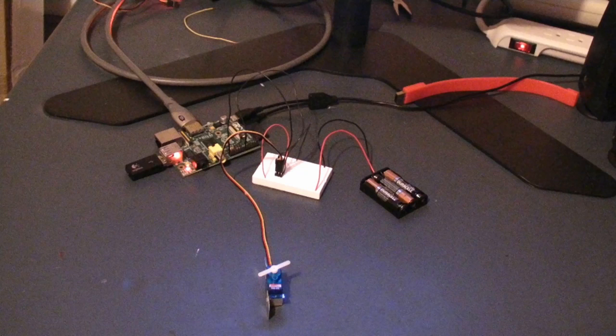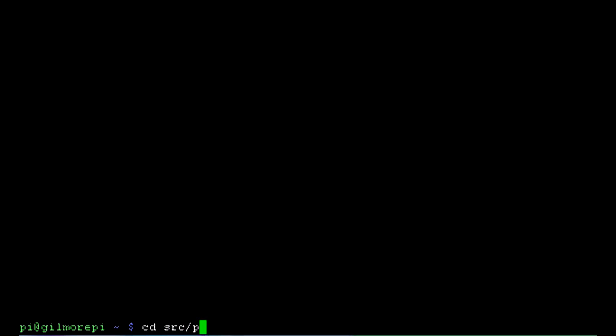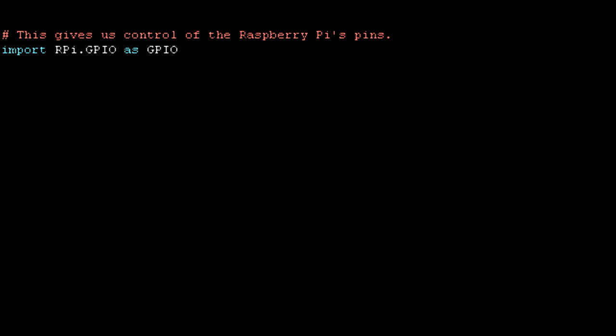Let's take a look at some code. Here's our first line. It imports the Raspberry Pi GPIO library and gives it an alias.